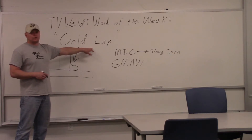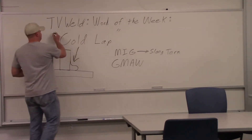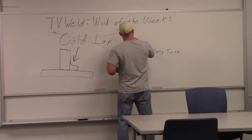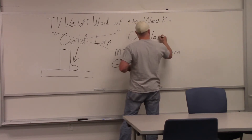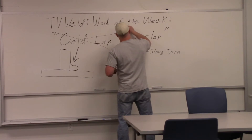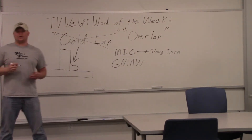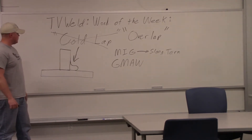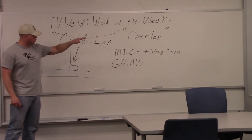Actually, it's not really called cold lap. This is something we're going to try and clear up — some slang terms. So we're going to cross this right out. The correct term is overlap. Cold lap is one of the many slang terms the welding industry has. This is a drawing of a fillet weld on a T-joint, and this is what they're referring to when they say cold lap, which is actually called overlap.